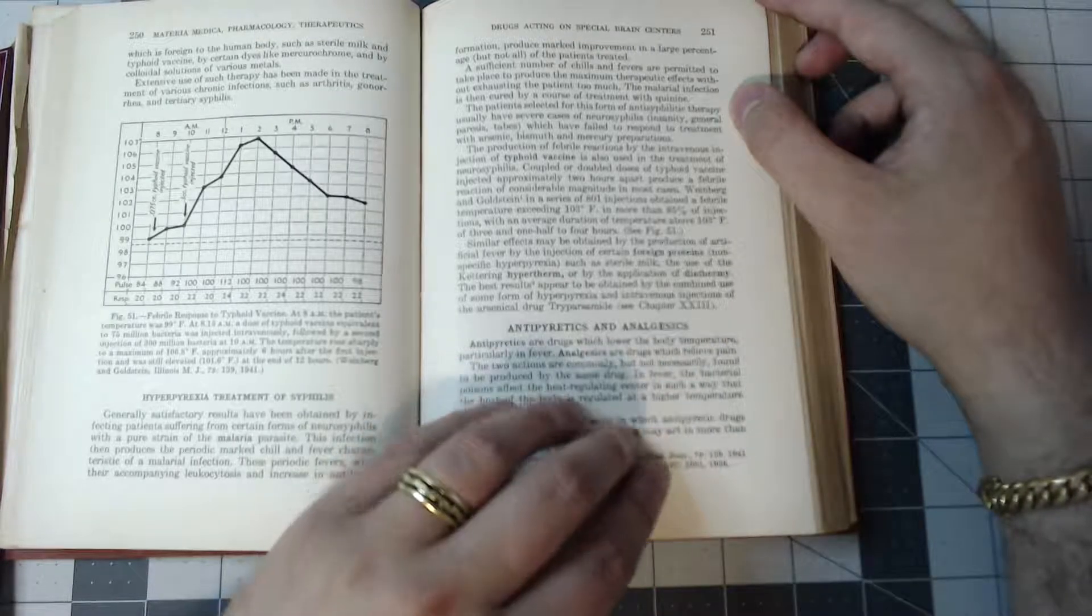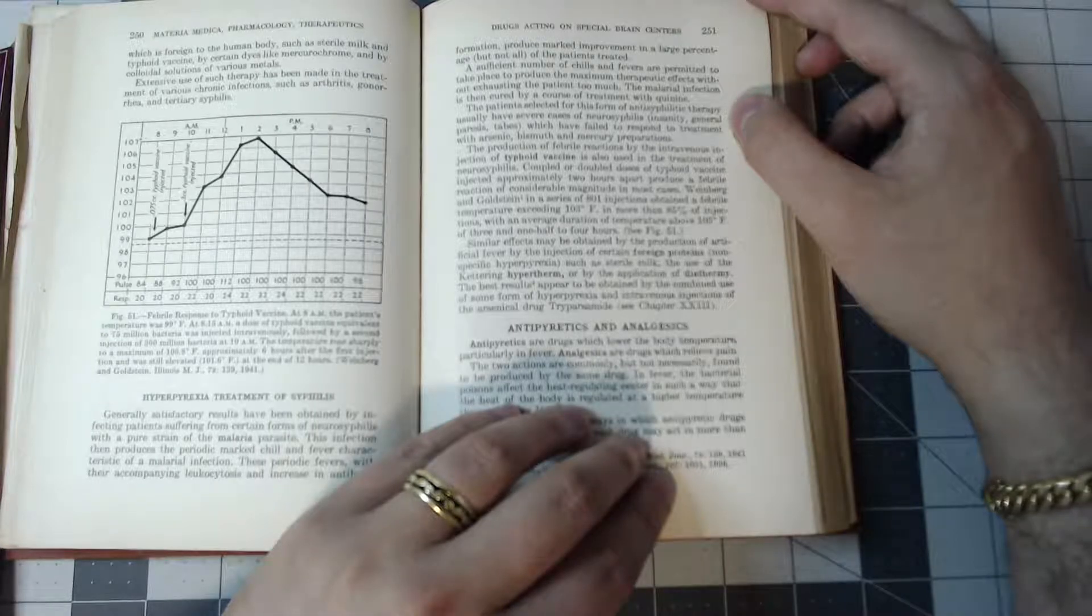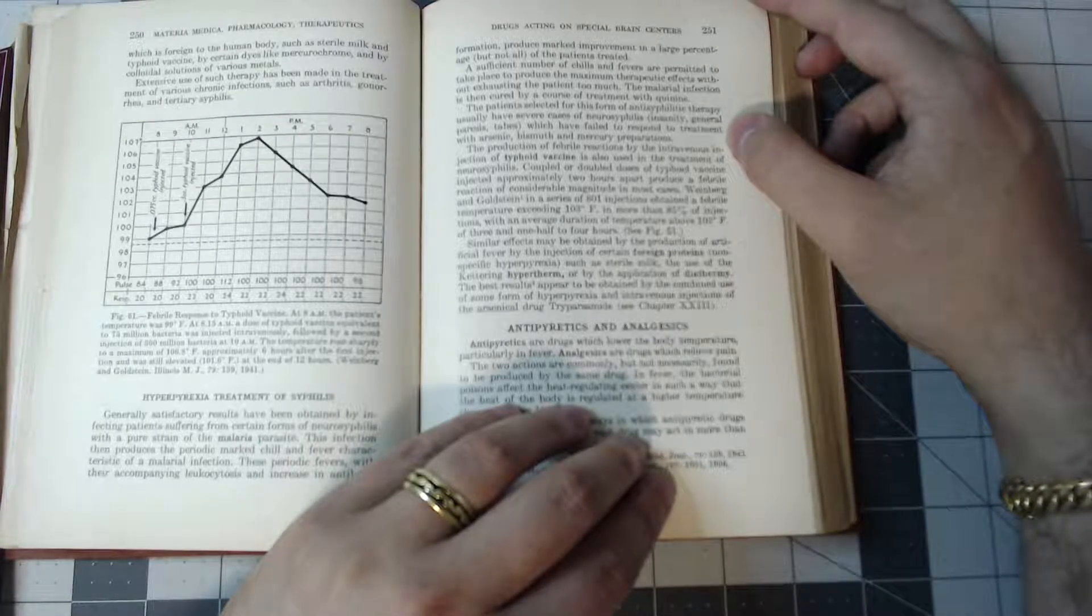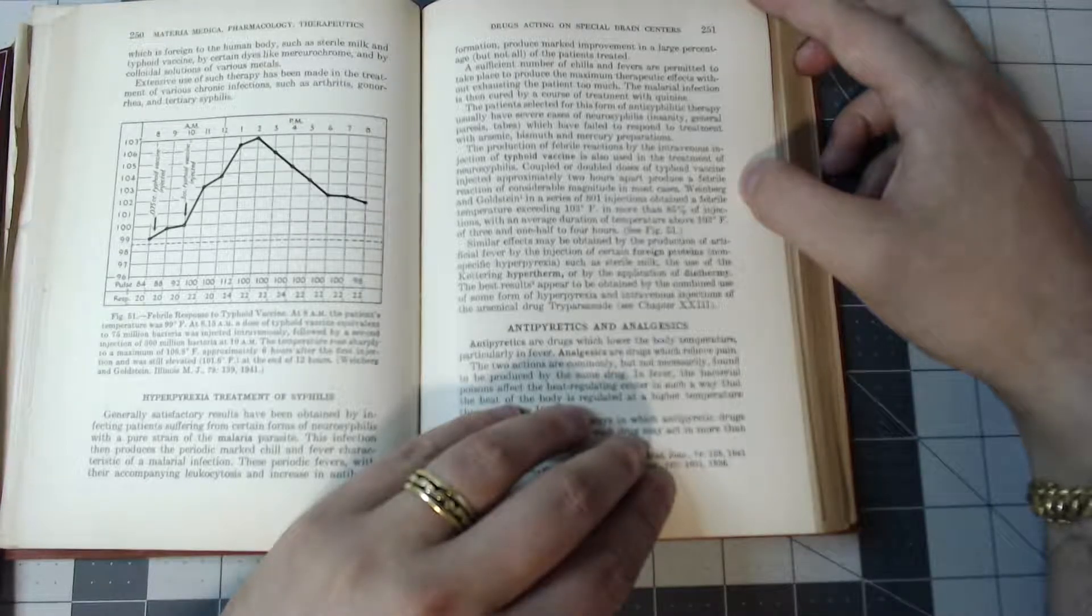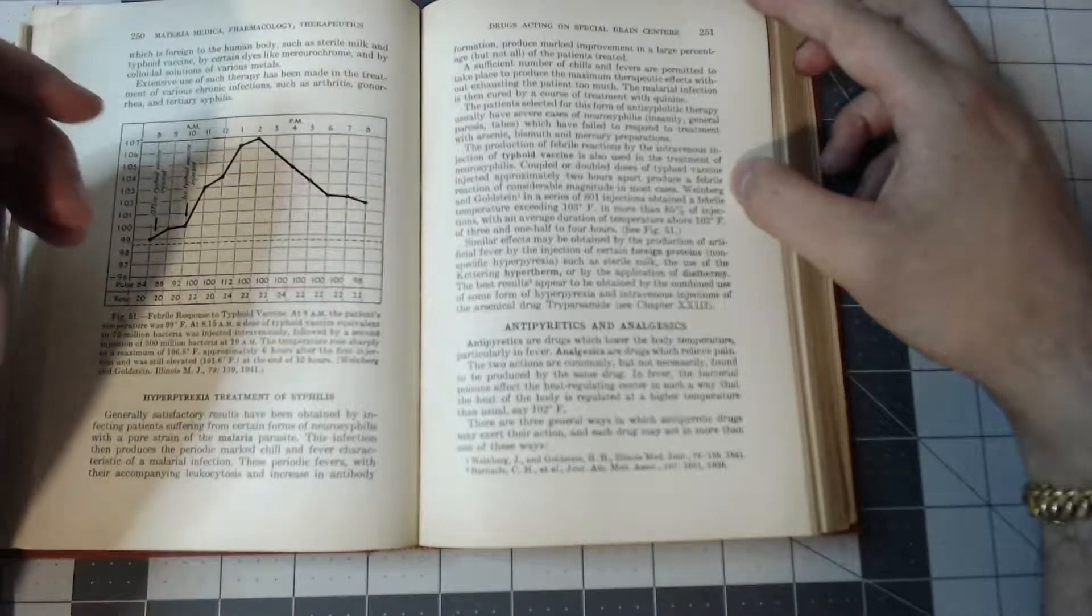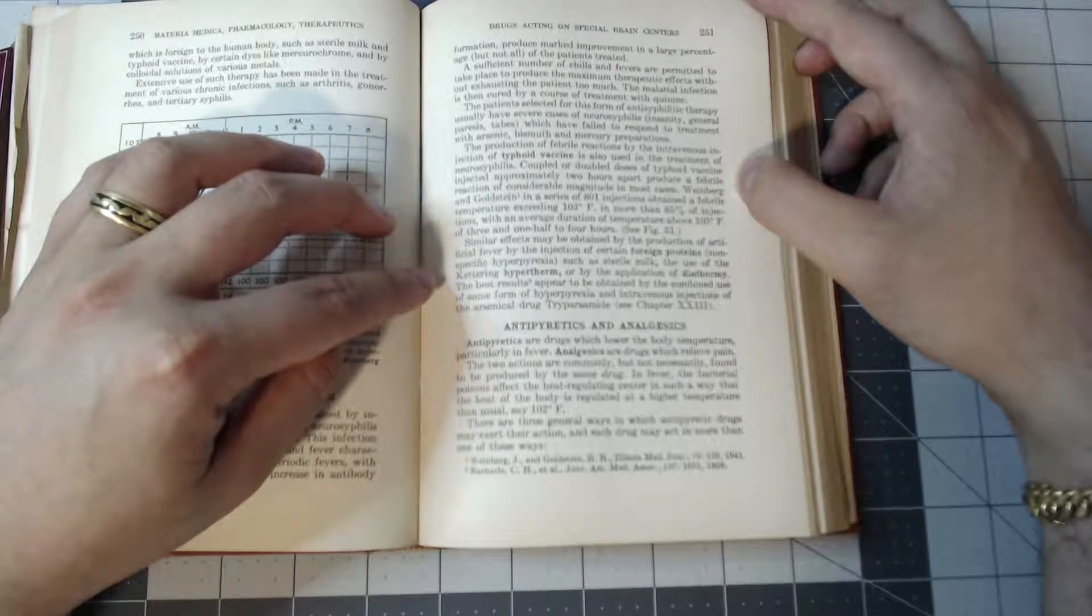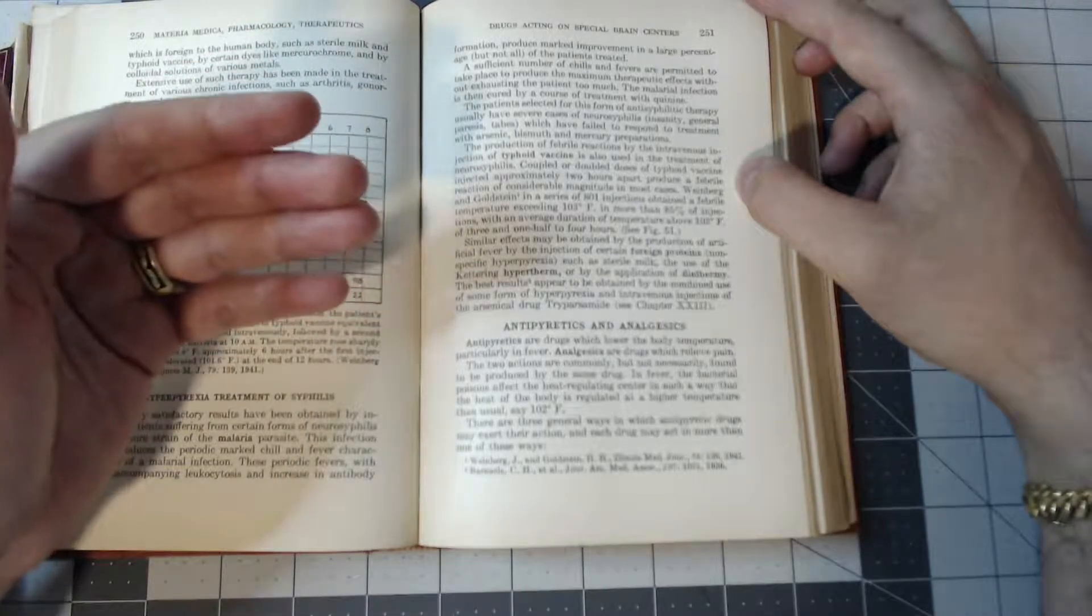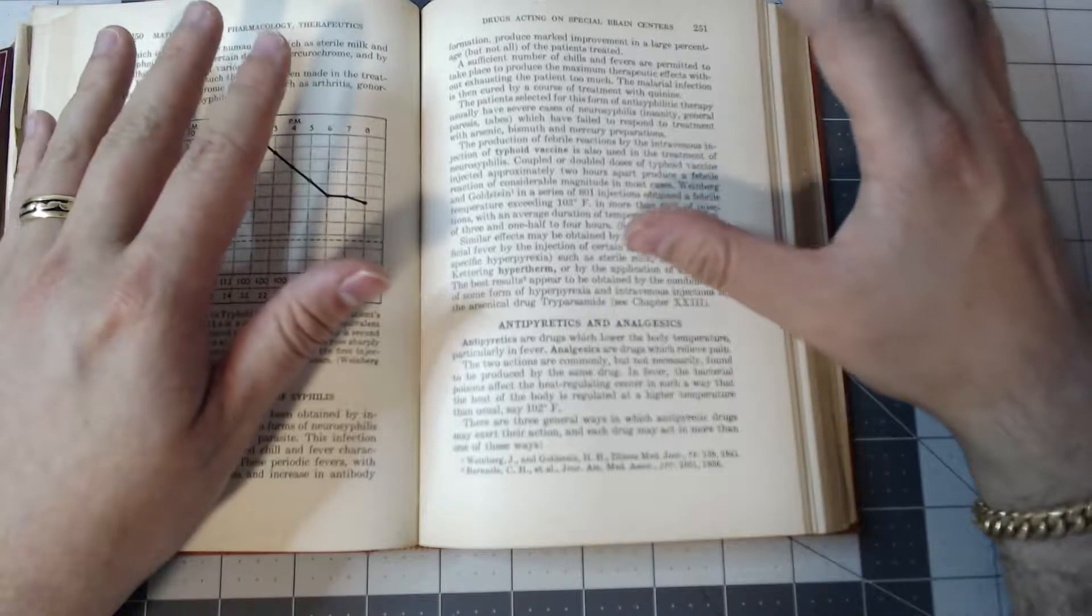Yeah, that's interesting. The production of febrile reactions by the intravenous injection of typhoid vaccine is also used in treatment of neurosyphilis. Coupled or double doses of typhoid vaccine injected approximately two hours apart produce a febrile reaction of considerable magnitude in most cases. Weinberg and Goldstein in a series of 801 injections obtained a febrile temperature exceeding 103 degrees Fahrenheit in more than 85% of injections with the average duration of temperature above 103 Fahrenheit, three and a half to four hours. So there's a figure associated with this, you can see a spike that occurs. Similar effects may be obtained by the production of artificial fever by injection of certain foreign proteins, such as sterile milk, the use of the Kettering hypertherm or by the application of diathermy. The best results appear to be obtained by the combined use of some form of hyperpyrexia and intravenous injections of the arsenical drug.